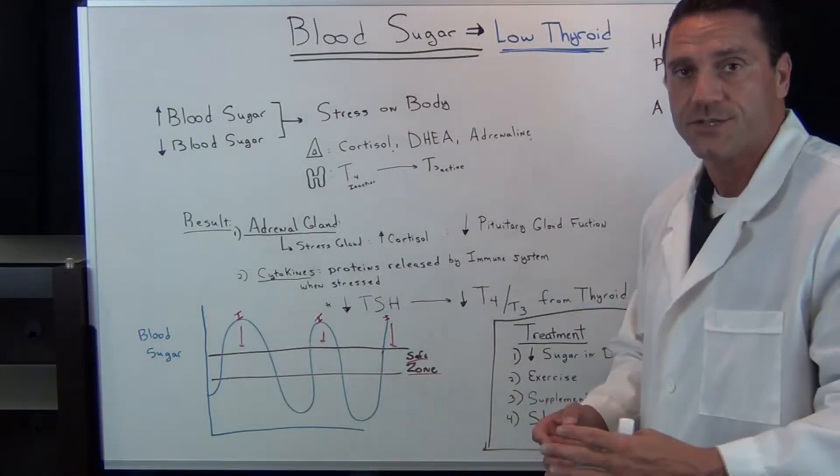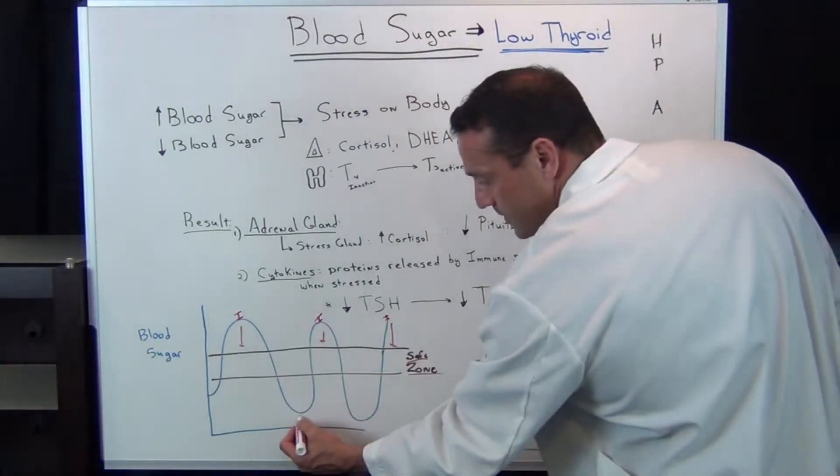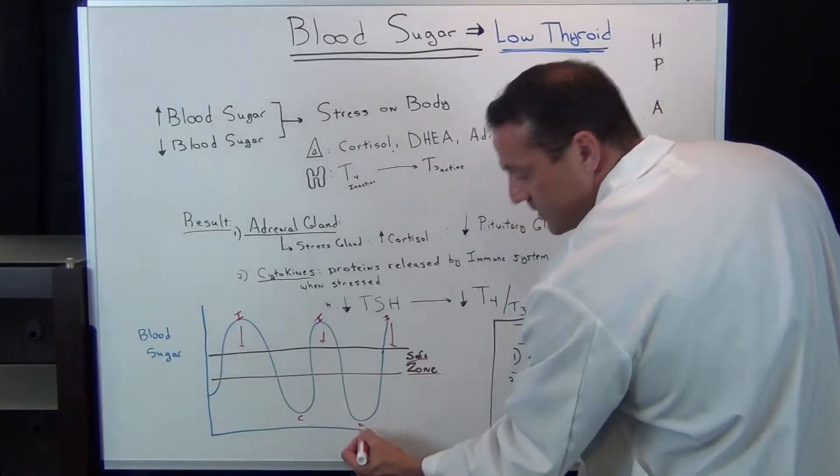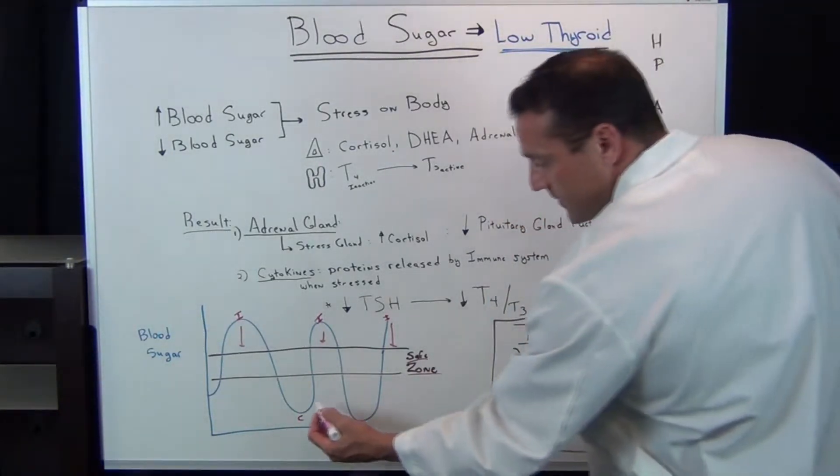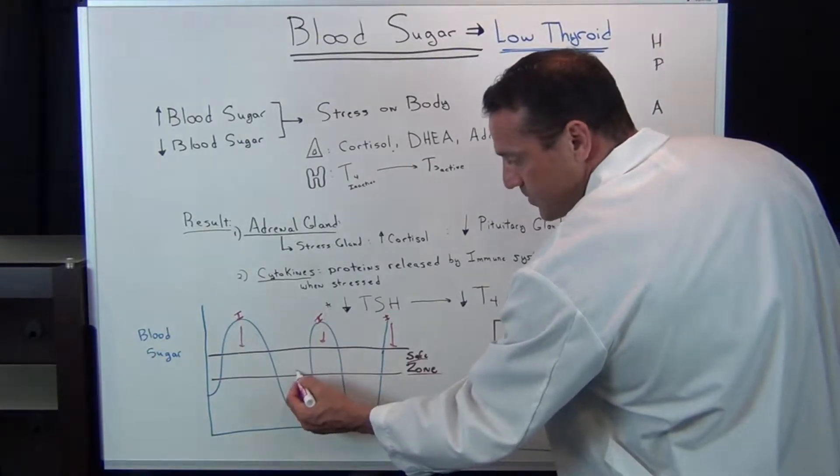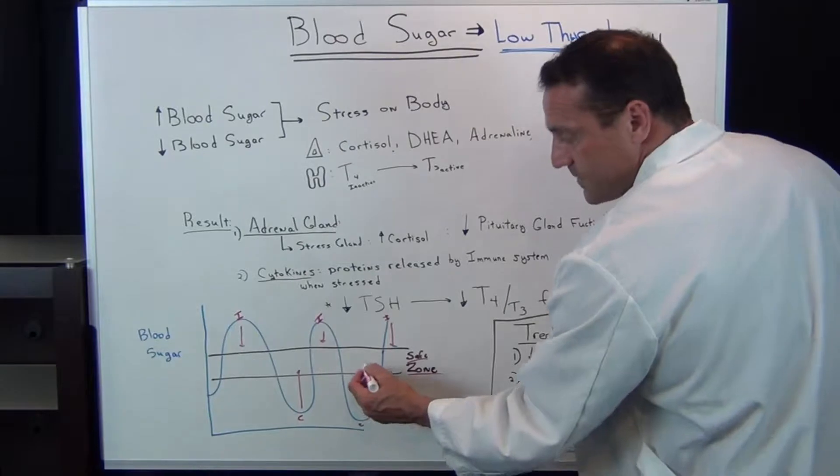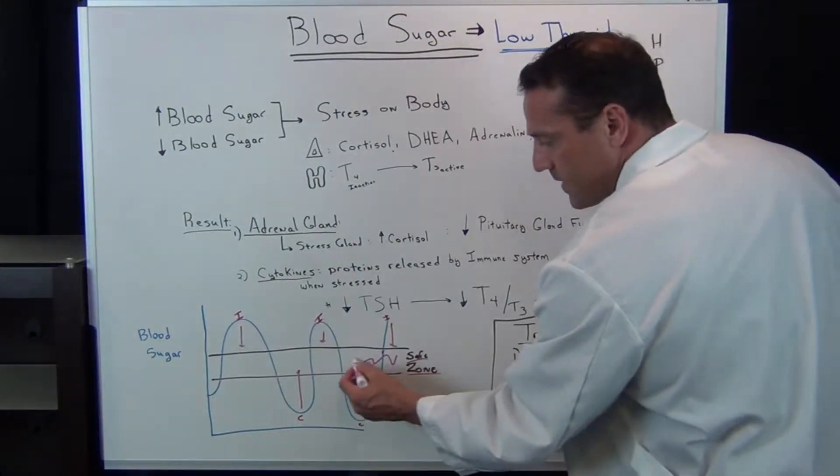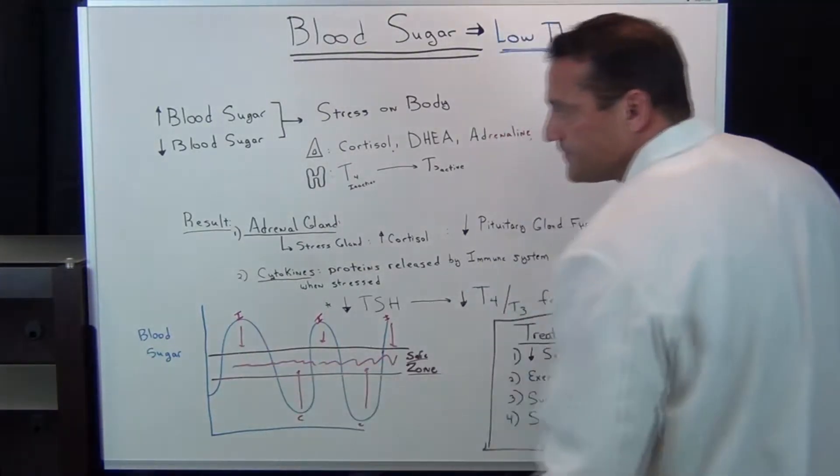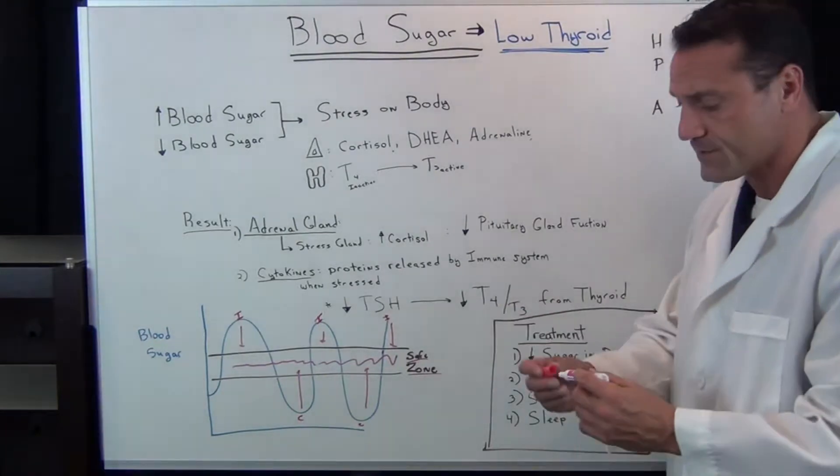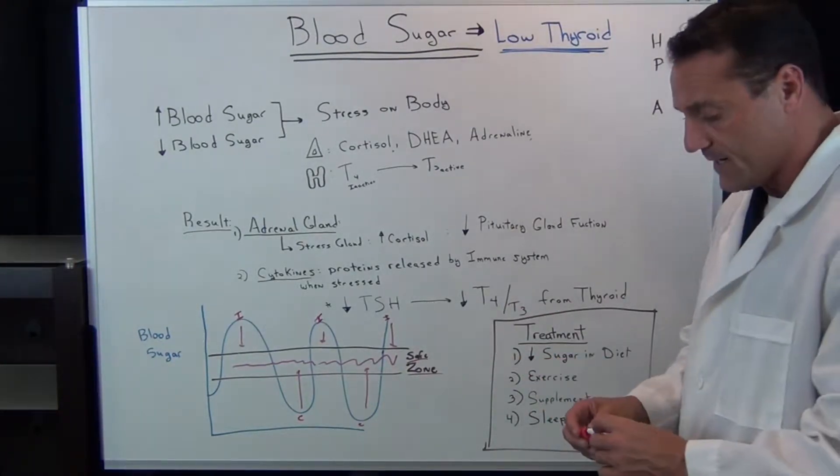If we go about with low blood sugar, we release a hormone from our adrenal glands called cortisol. The function of cortisol is to bring up the sugar. We want to be in the safe zone to feel good. The problem is when we have those fluctuations, it causes tremendous stress on the body.